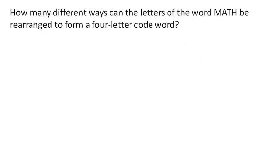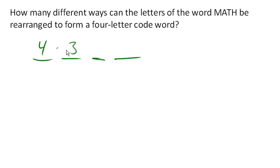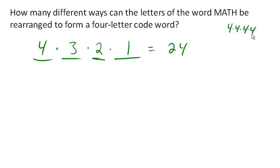How many different ways could the letters of the word MATH be rearranged to form a four-letter codeword? We have four letters. How many choices for the first letter? Four. For the second letter — since we're rearranging and can't use any letter twice — three choices. For the third, two choices, and only one choice for the last. That gives 4 × 3 × 2 × 1 = 24 different codewords. Note that's different from allowing repeats, which would give 4⁴ = 256 different codewords.